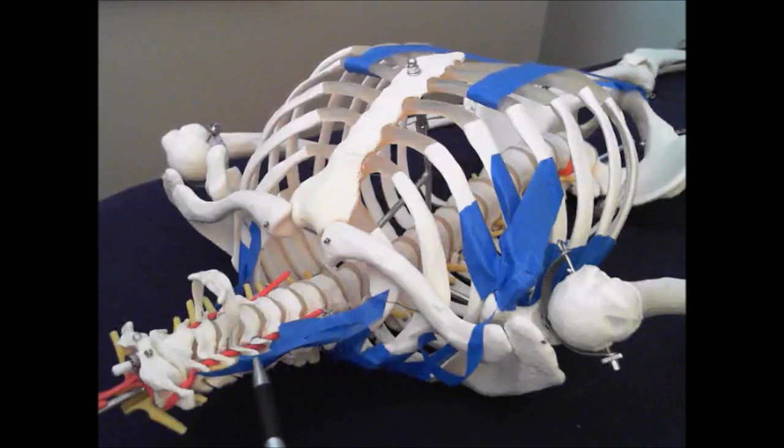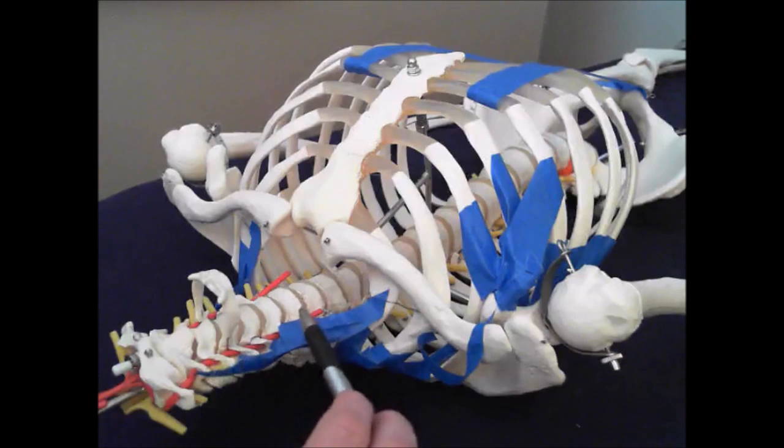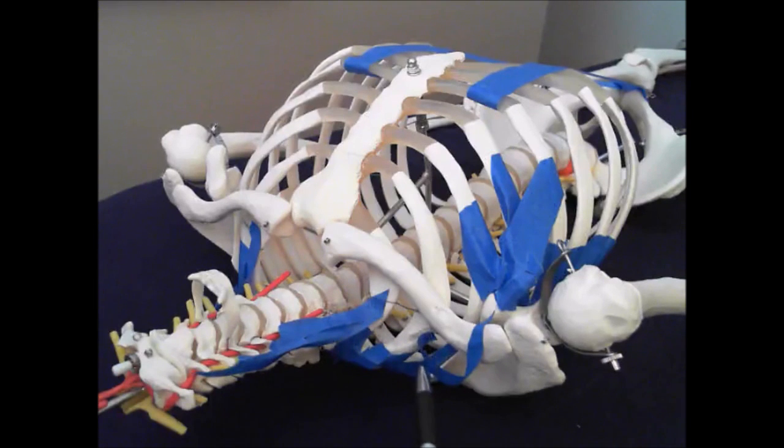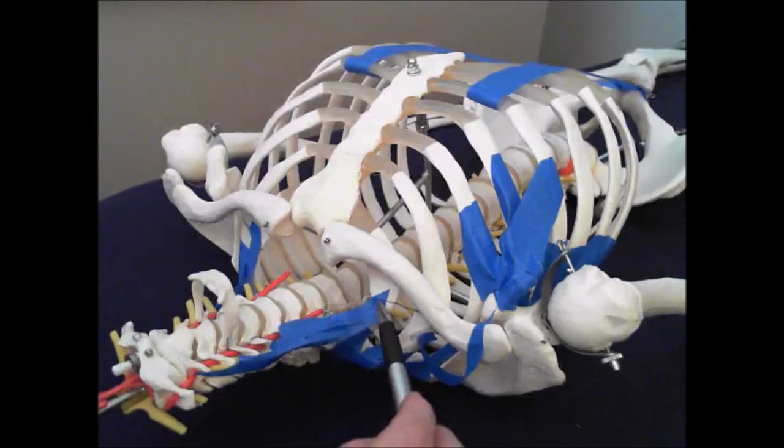So the medial head of the scalene goes from C2 to anywhere from C5, C6 to C7 depending on the person. The posterior scalene attaches posteriorly on these transverse processes of the cervical spine around C6, C7 and then they come down to the second rib. The medial goes to the first rib.